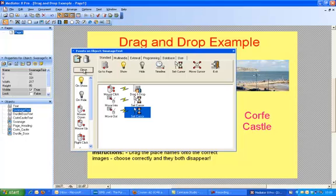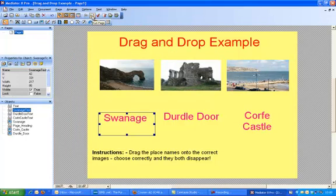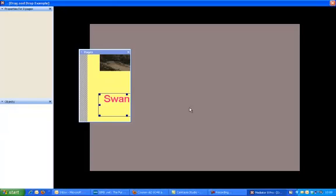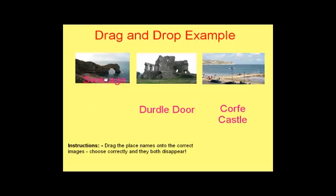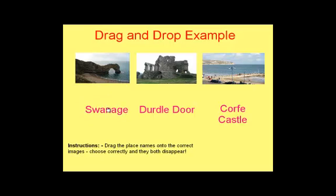Let's prove that works. Close that and test it — it's always a good skill in Mediator whenever you do something to actually test that it works. If I run this page, I can now move into the text box for Swanage, and hopefully when you click on it, nothing happens elsewhere, but it changes into a pointer and I can pick it up. It's become draggable, but it's clearly not been able to drop yet.